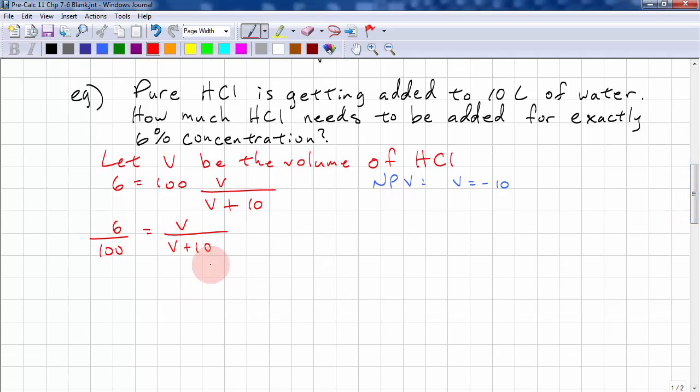And what we can do in this situation is called cross multiplying. So we got 6 times v plus 10 equals 100v. And what we'd like to do is expand this side, 6v plus 60 equals 100v. So we want to move all the v's over to one side. 100 minus 6 is 94. And then we divide both sides by 94.